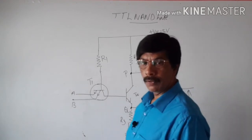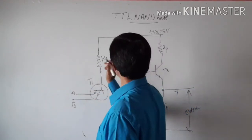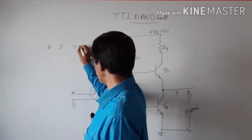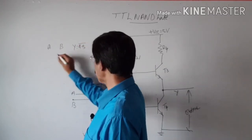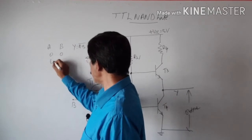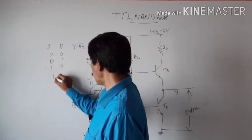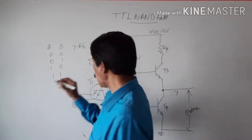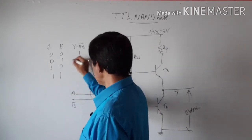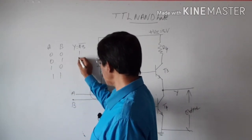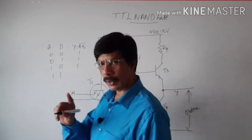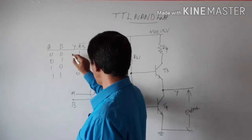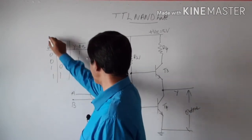The truth table for the TTL NAND gate: output Y = A·B bar. For A=0, B=0: output=1; A=0, B=1: output=1; A=1, B=0: output=1; A=1, B=1: output=0. This is the truth table for a 2-input NAND gate.